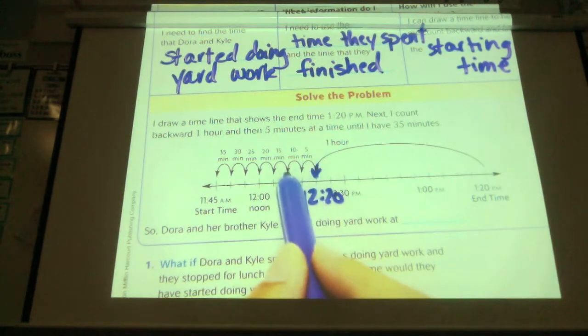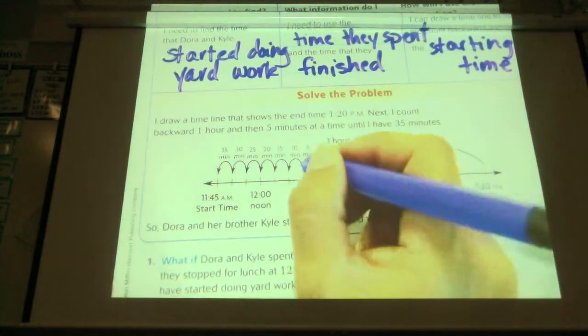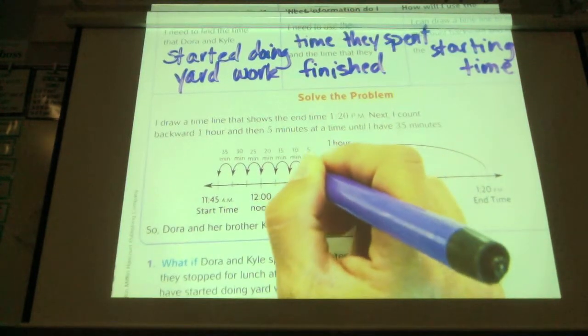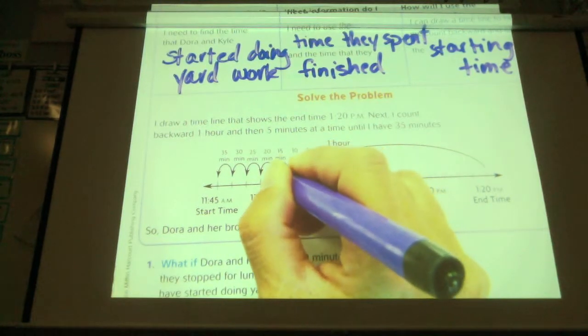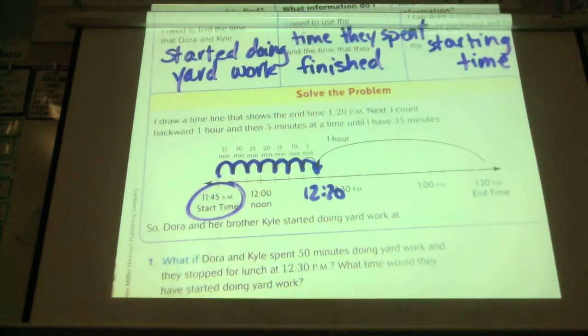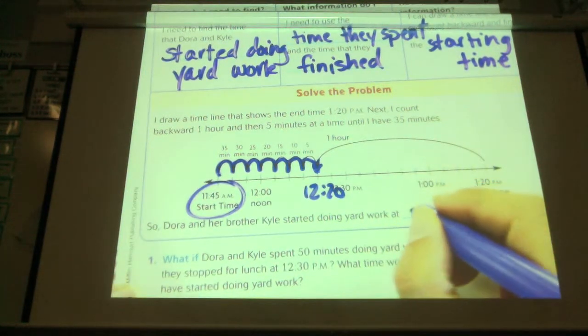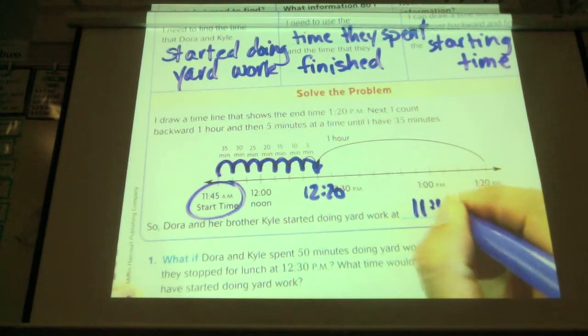Also, it tells me up here I'm bouncing back by 5 minutes. Okay, so now I'm at 12:20. And I'm going to count back by 5 minutes: 10, 15, 20, 25, 30, 35, which would give me a start time of 11:45. So Dora and her brother Kyle started doing work at 11:45.